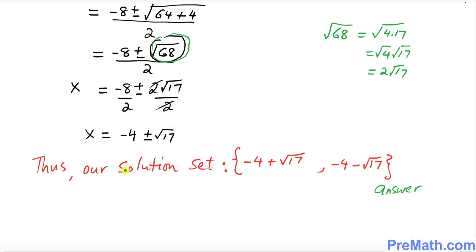And thus our solution set turns out to be {-4 + √17, -4 - √17}. That's our answer. Thanks for watching and please subscribe to my channel for more exciting videos.